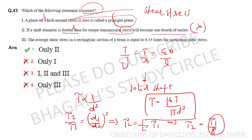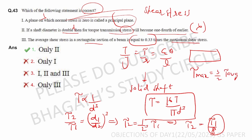Next: the average shear stress in a rectangular section of a beam is equal to 0.33 times the maximum shear stress — this is incorrect. Actually, τ_max = (3/2) × τ_average, so τ_average = (2/3) × τ_max = 0.67 × τ_max. So this option is wrong — three options are wrong.